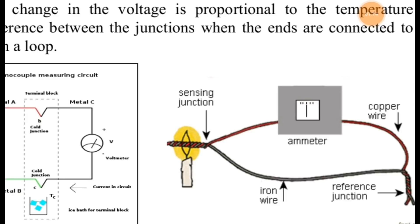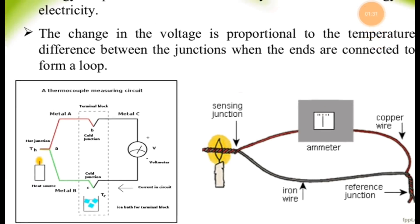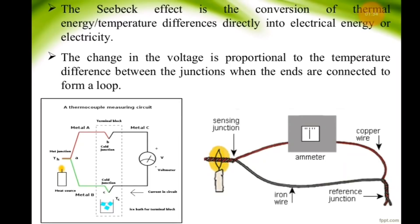The heat from one end of the candle passes through the ammeter and then to the copper wire. A reference junction is present where the copper wire and iron wire absorb heat at different temperatures, and this difference causes electricity to move through the wire.